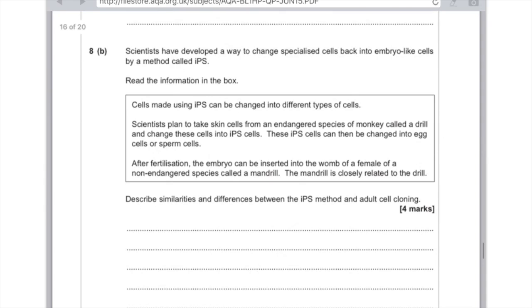First of all, both methods use a body cell, and both methods result in the formation of an embryo. Remember that the embryo needs to be transferred into the uterus of a surrogate mother. For all of these points, they are common between the IPS method and the adult cell cloning.